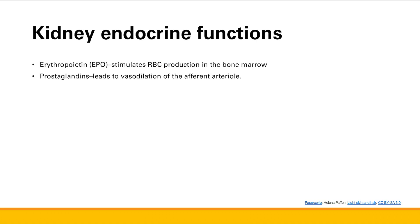Number two is prostaglandins. The kidneys will make prostaglandins, and those do a little paracrine secretion — just local diffusion. They're going to cause vasodilation of the afferent arteriole. So remember, prostaglandins dilate the afferent arteriole, and they are made paracrinally in the kidney.